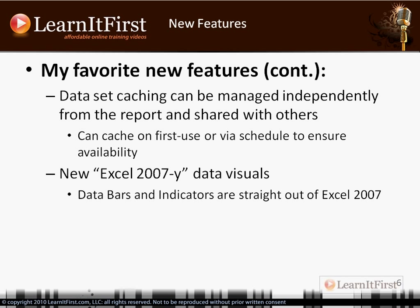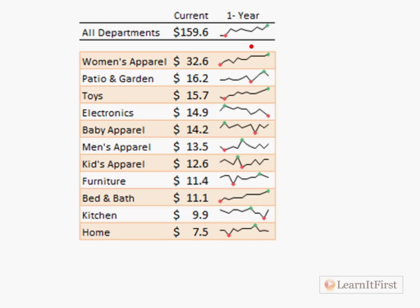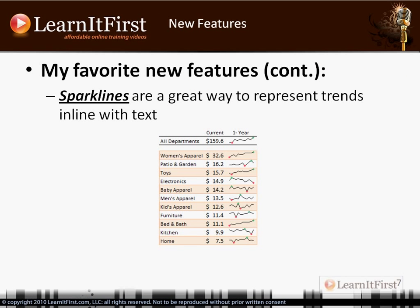I also like the new visualizations in Reporting Services. If you've dealt with Excel 2007 or 2010 visualizations — the stop signs, color indicators, all the colorization tools — many of those are now brought into Reporting Services. There's also a new one called sparklines. Sparklines fit within a single line and show a trend — for example, showing that women's apparel went from a low to a high over a one-year period. It's a great way to show trends in a compact report.